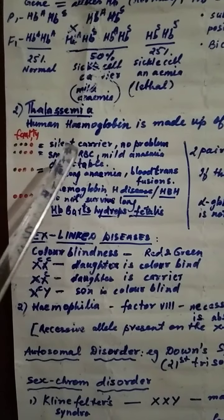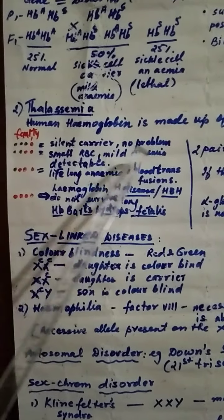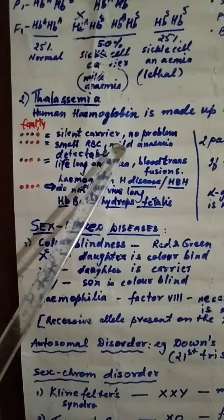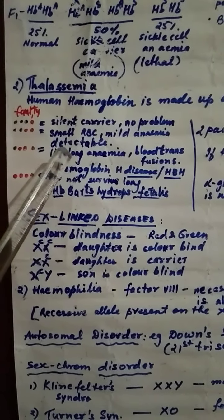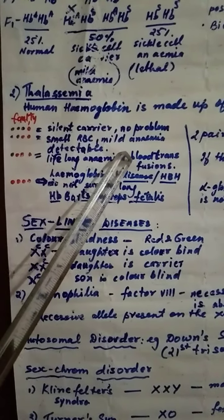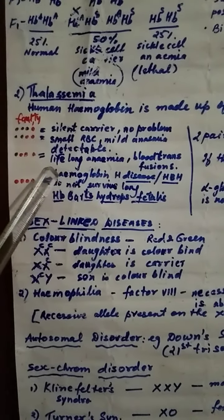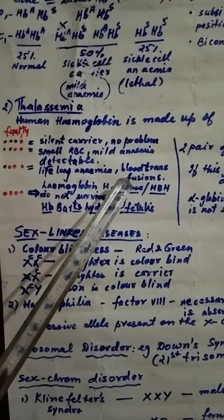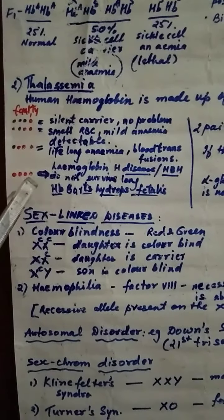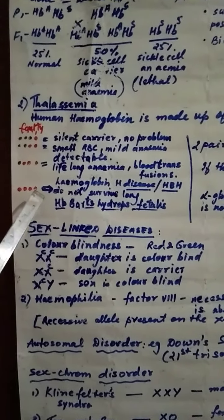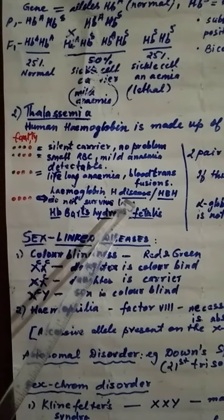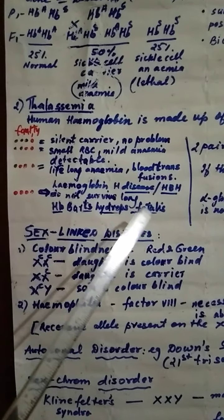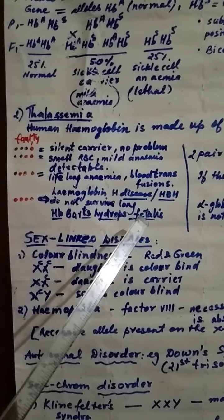Third case, if 3 genes are defective, then the person will suffer lifelong anemia. Then blood transfusion is necessary for them. Hemoglobin H disease it is called and so symbolized by HbH. Fourth case, if all the genes are defective, then what will happen? They will not survive. It is long lasting anemia and this is called HB Barts hydrops fetalis. So this was regarding thalassemia. We have to explain this condition.